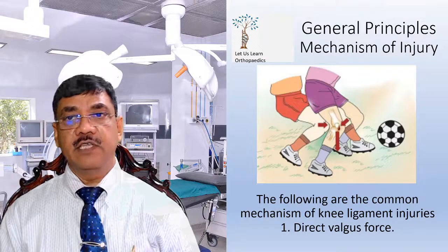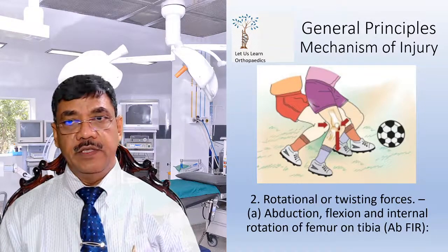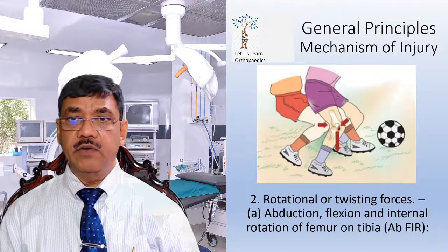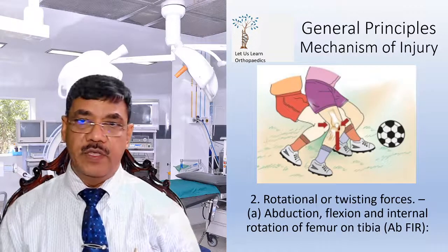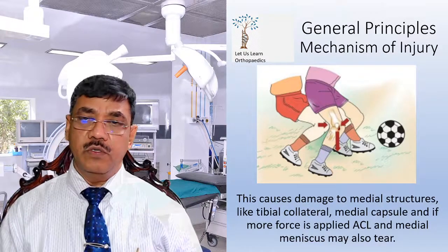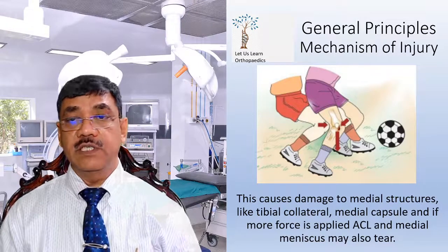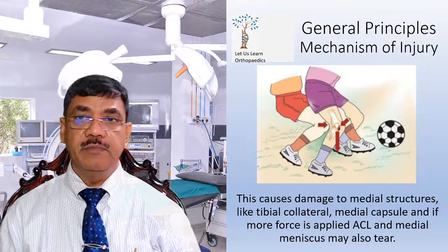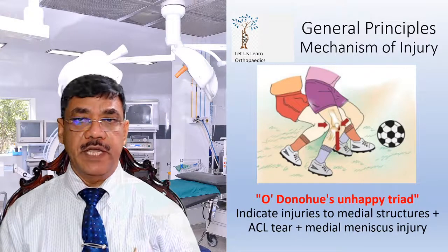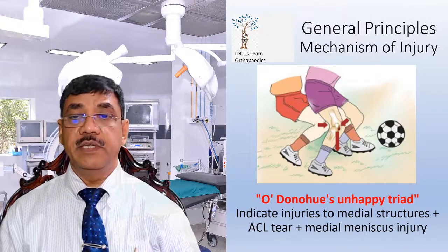One is a direct valgus force. Second is rotational or twisting forces. The first subtype is abduction, flexion, and internal rotation of the femur on the tibia — remember it as ABFIR. This causes damage to the medial structures like the tibial collateral ligament, medial capsule, and if more force is applied, even the ACL and medial meniscus may also tear. O'Donoghue's unhappy triad indicates injuries to the medial structures plus ACL tear plus medial meniscal injury.